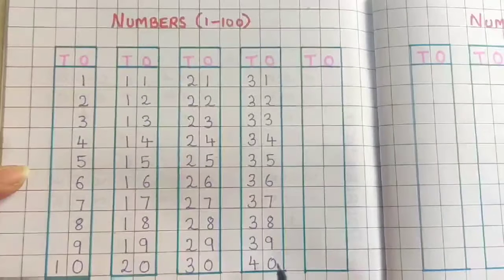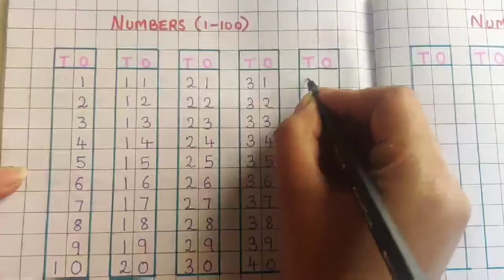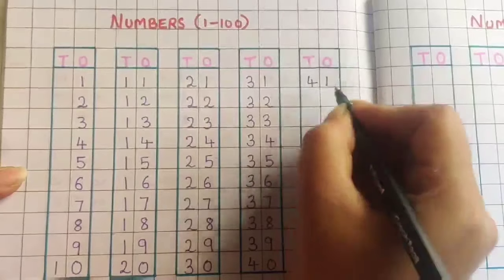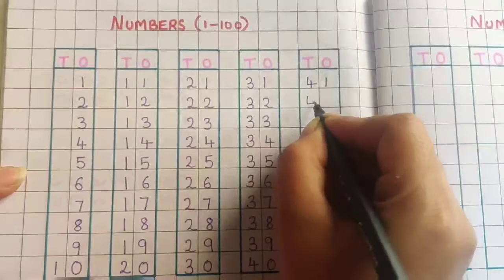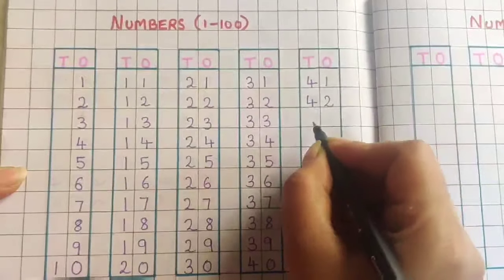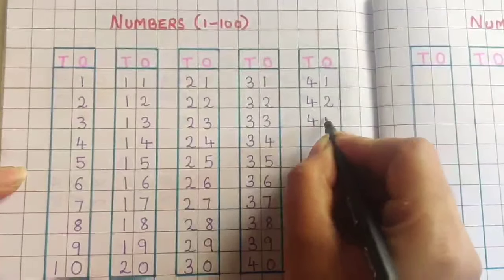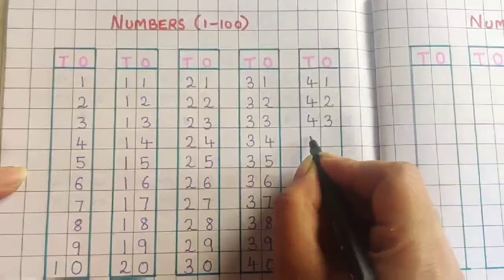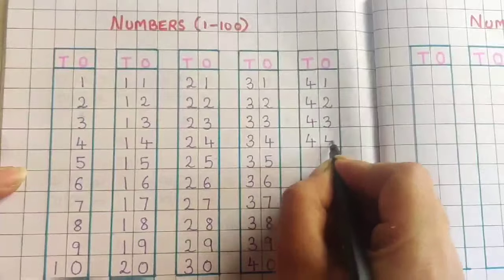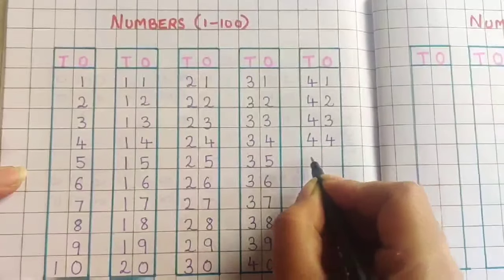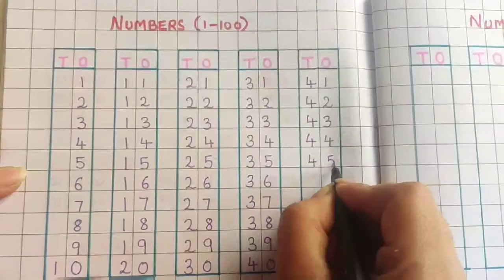4, 0, 40. 4, 1, 41. 4, 2, 42. 4, 3, 43. 4, 4, 44. 4, 5, 45.